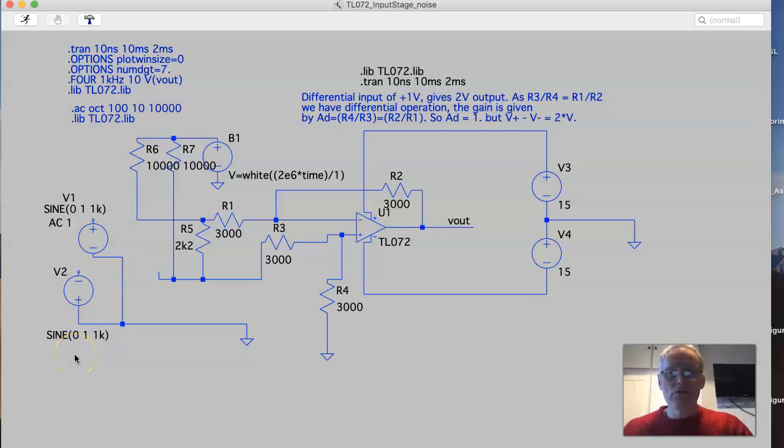In this video we're going to look at the noise rejection capabilities of the differential amplifier. I've configured the amp to have R1 equals R2 equals R3 equals R4, and I've got a bridging resistor value of 2k2.